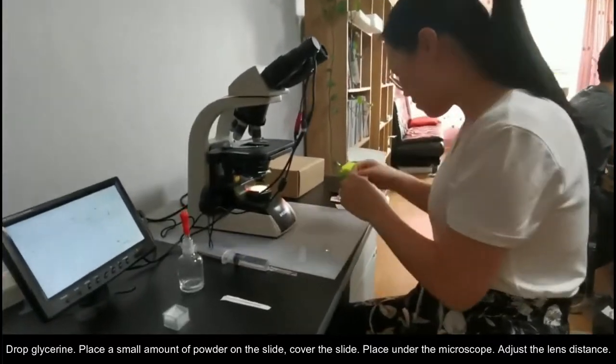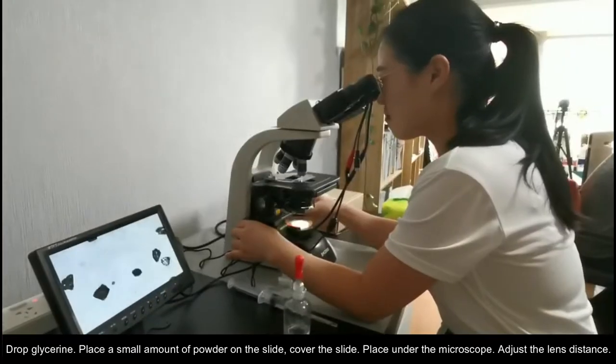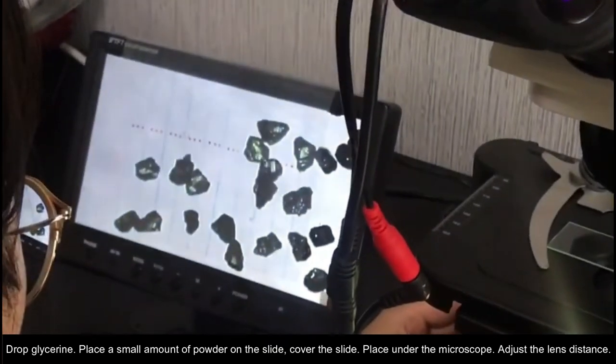Drop glycerin. Place a small amount of powder on the slide. Cover the slide. Place under the microscope. Adjust the lens distance.